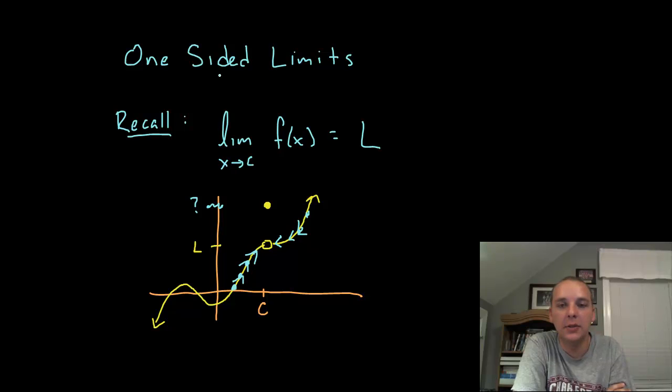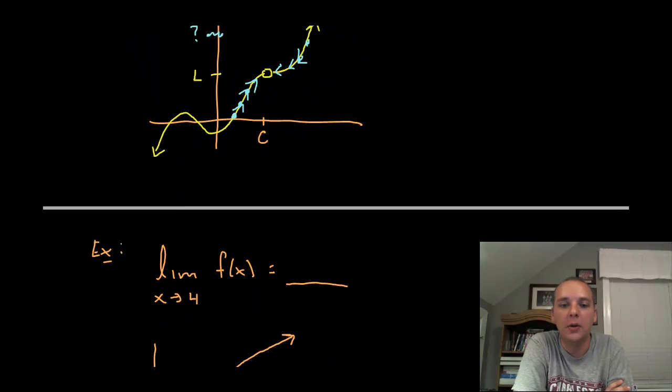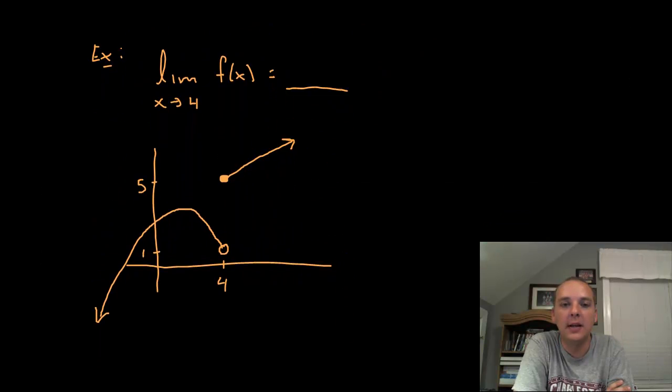And the thing that we stressed about limits was I don't actually care what happens at c. If it was defined to be right here that would be a happy coincidence but it doesn't have to be. It may not be defined at all at c; that doesn't matter in regards to what the limit is. So what does it mean to have a one-sided limit?